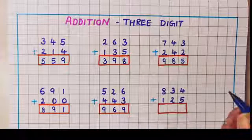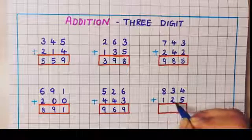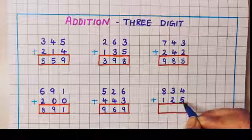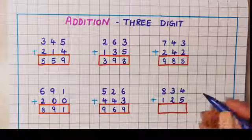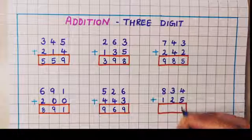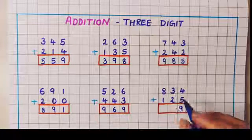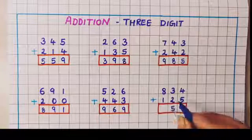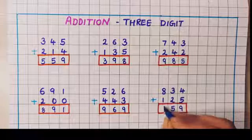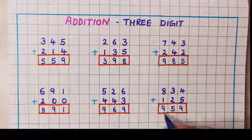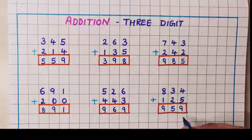Now the next problem is 834 plus 125. 4 plus 5 is 9, 3 plus 2 is 5, and 8 plus 1 is 9. The answer is 959.